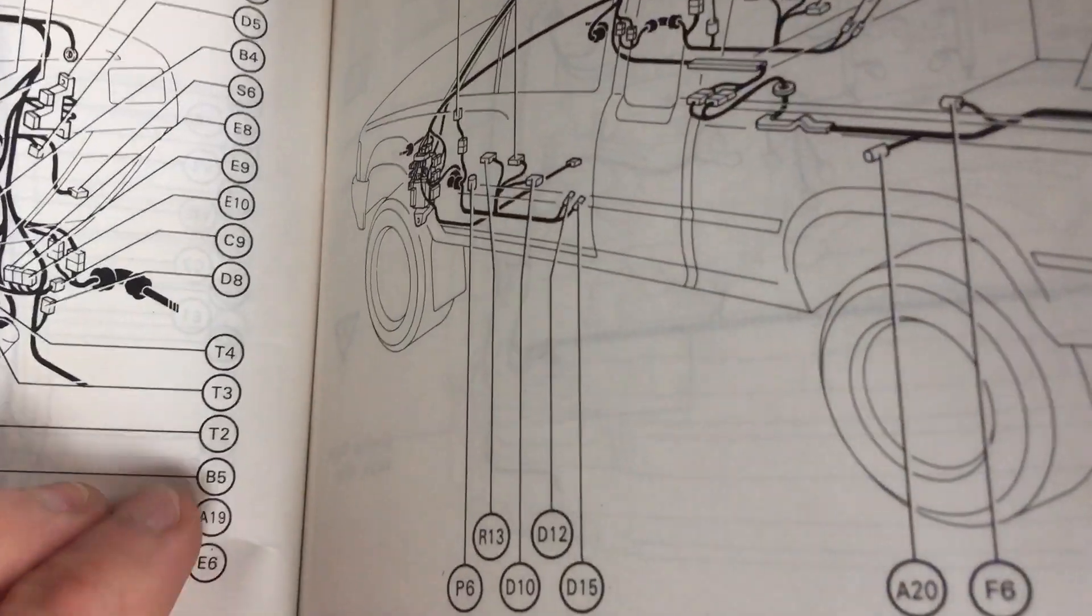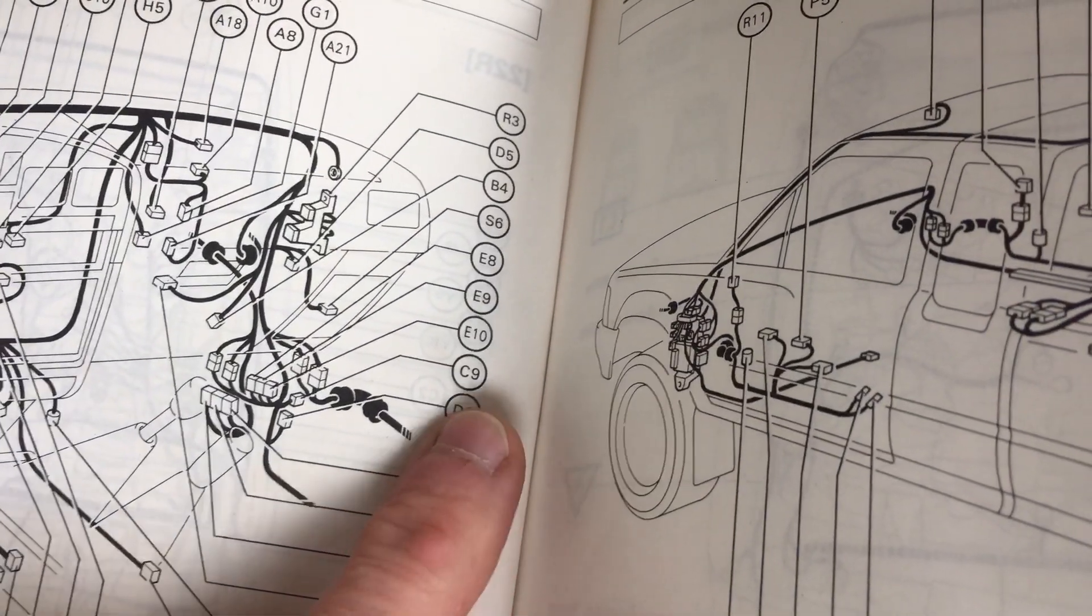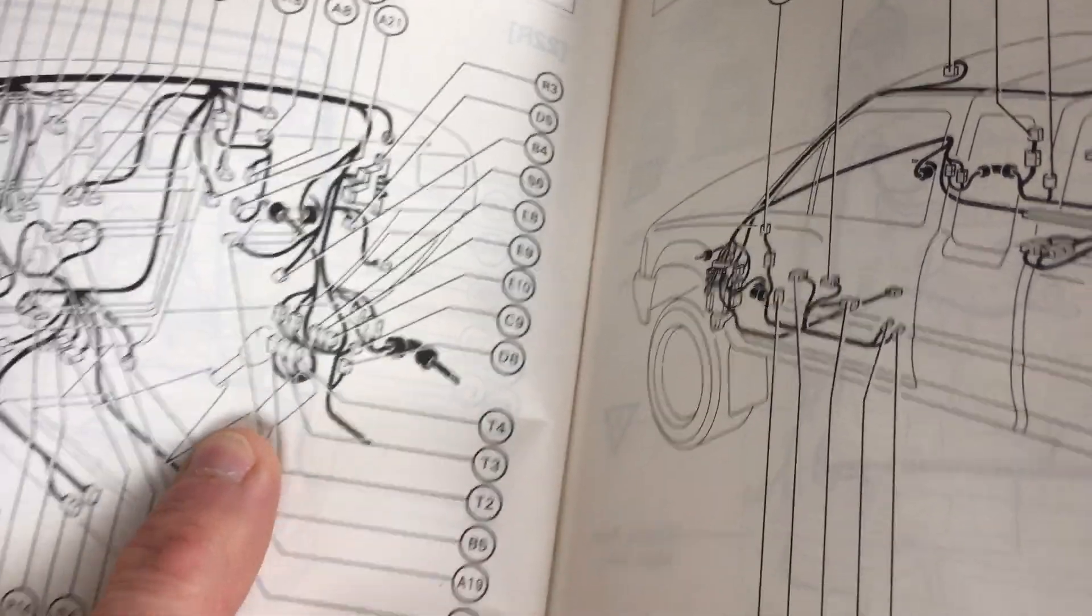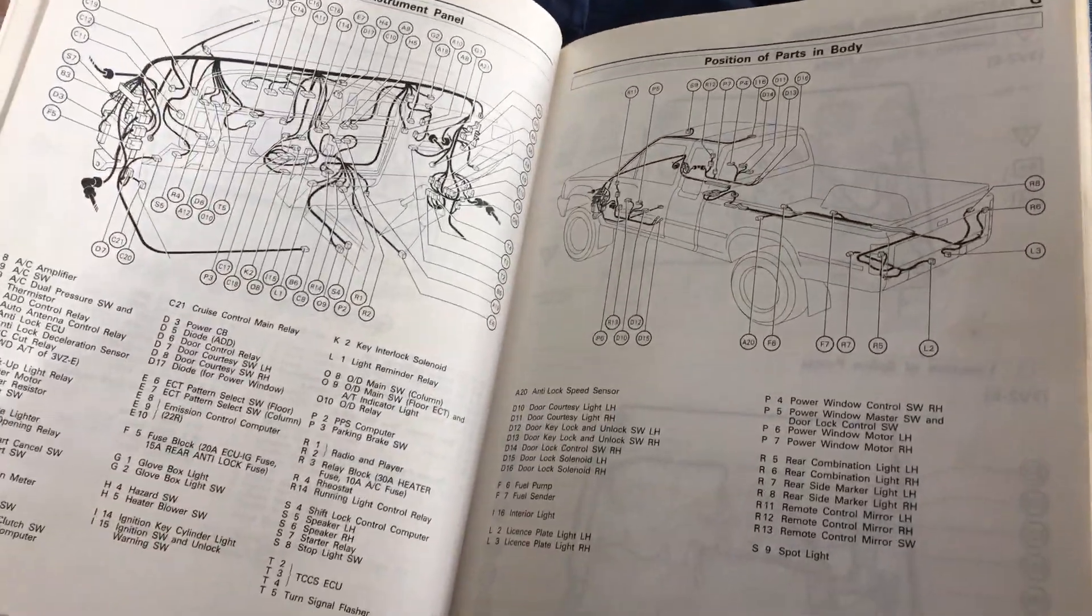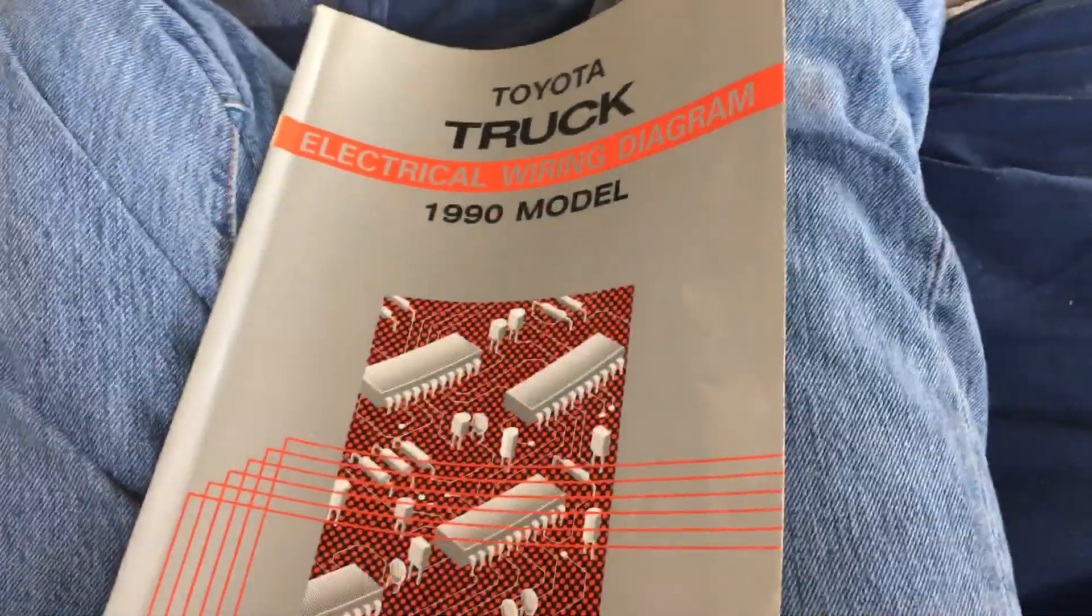The circuit opening relay—you can just track it right down. C9 is over in the kick panel. That illustrates how helpful this manual is, so you definitely want to get this for your truck. Alright, hope the video helps you.